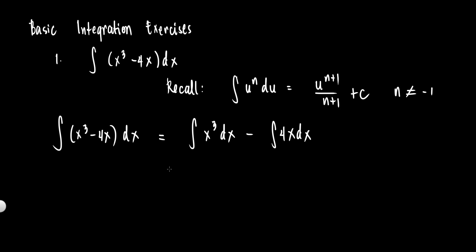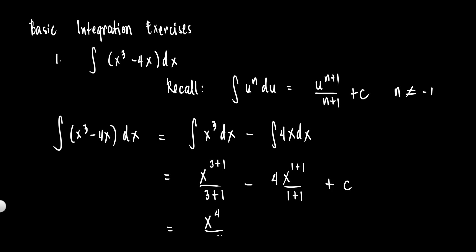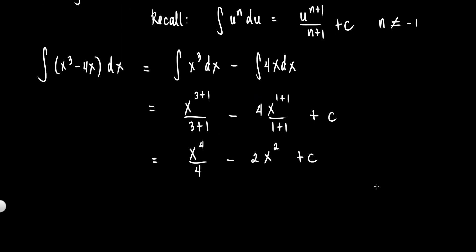Applying the power formula, this is equal to x raised to 3 plus 1, over 3 plus 1, plus c — minus 4 times x raised to 1 plus 1, over 1 plus 1, plus c. Note that c plus c is still c, since constant plus constant is another constant. Simplifying: x raised to 4 over 4, minus 4 over 2 times x squared, gives us x to the 4th over 4 minus 2x squared plus c. This is the final answer.